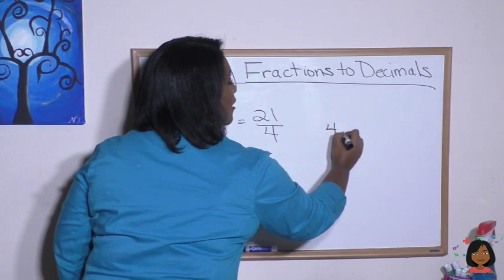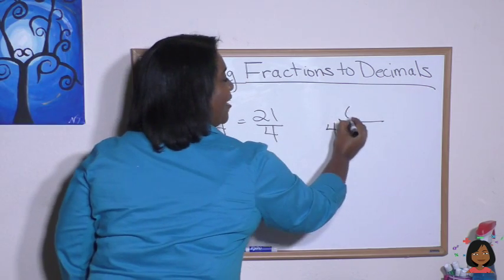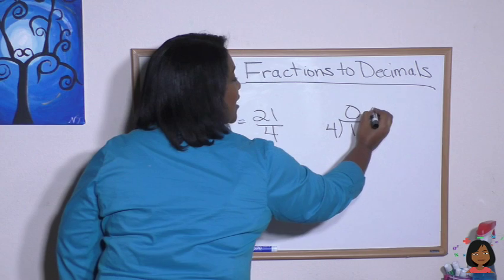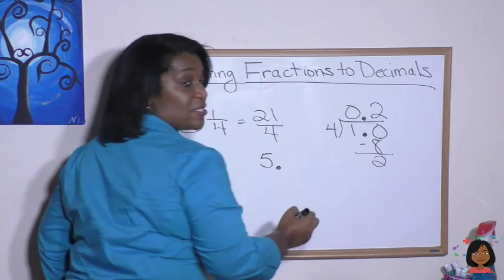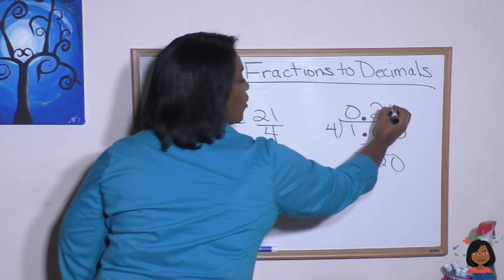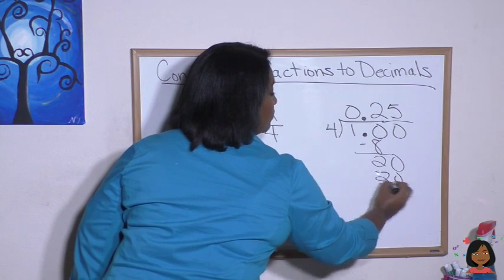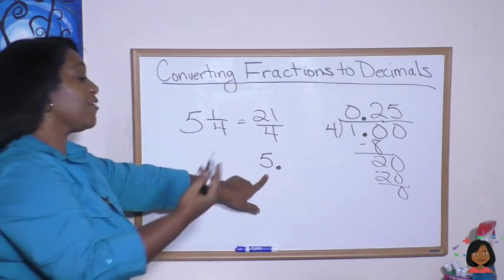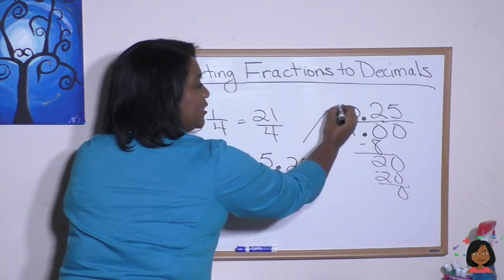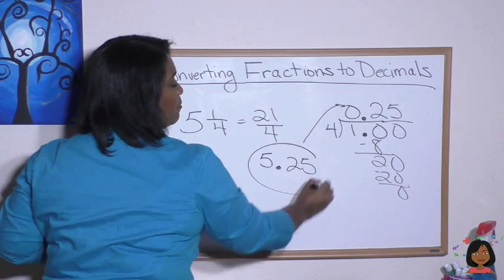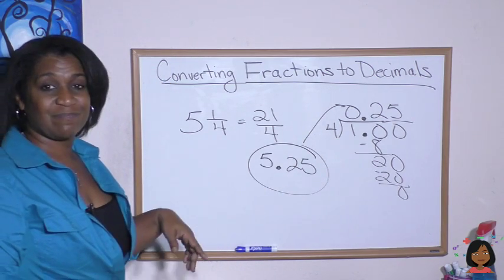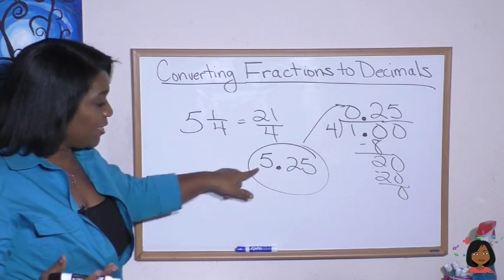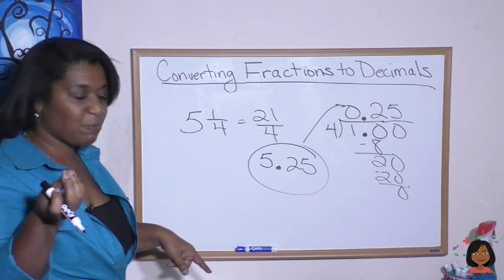One-fourth is the same thing as 4 into 1. We know 4 can't go into 1, so we add a decimal and a zero. 4 goes into 10, two times, which is 8, leaving a remainder of 2. 4 goes into 20, five times, and we're done. So the decimal portion is just 0.25. Adding it to our existing 5 gives us 5.25 — that is the equivalent decimal for this mixed number. You could do it either way: turn it into an improper fraction and divide, or just bring the whole number down and do the division on the fraction piece.